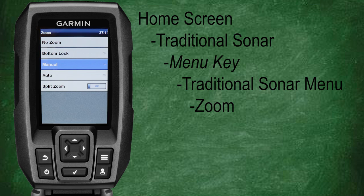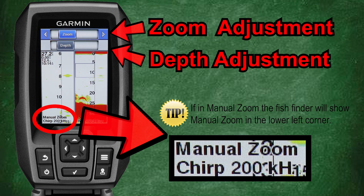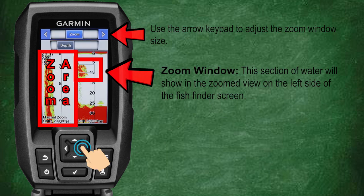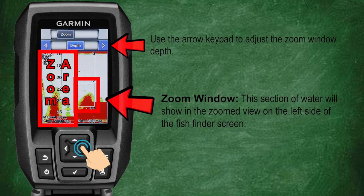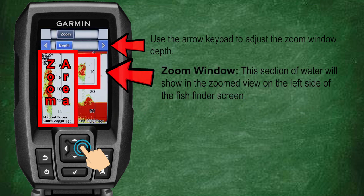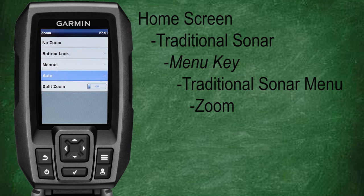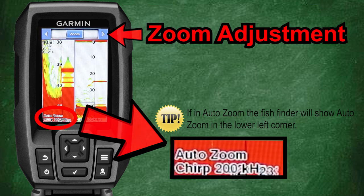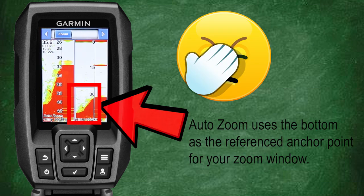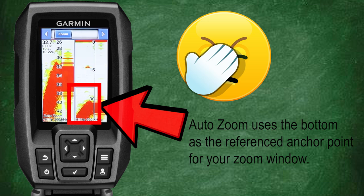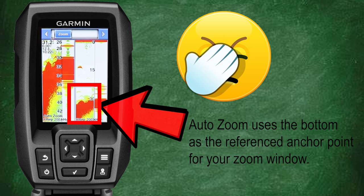Back at our zoom menu, scroll down and select manual. With the manual zoom selection you have the options to adjust the zoom in depth. As we adjust our zoom you'll notice the box on the right hand of the screen changes size to represent the area of your zoom, and adjusting your depth will move your zoom box within the water column. Back at our zoom menu, select auto. With auto zoom you have the ability to change your zoom window size, but the biggest issue is that it uses the bottom as the starting point for your zoom, so your zoom is always locked to the bottom. This can be great if the majority of what you want to view is near the bottom, but this isn't always the case.